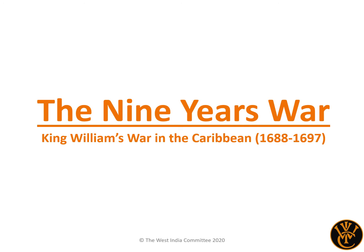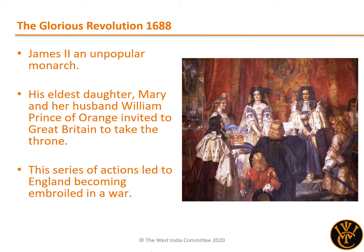The Nine Years' War – King William's War in the Caribbean from 1688 to 1697. In 1688, England witnessed what was later called the Glorious Revolution, where the Catholic King James II was deposed by the largely Protestant country, and his Protestant daughter Mary and her husband William, Prince of Orange, were invited from the Netherlands to take the throne, which they assumed as the joint monarchs Mary II and William III.